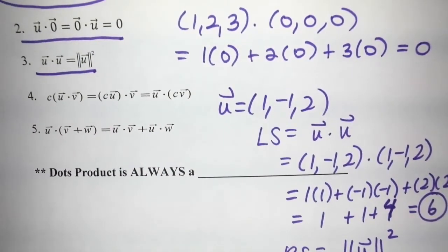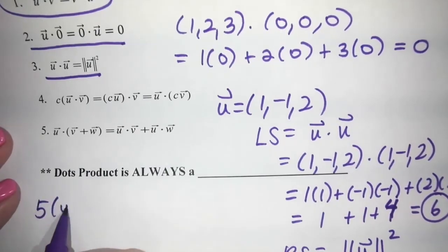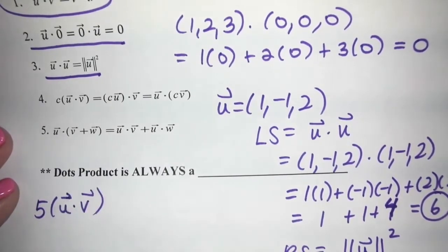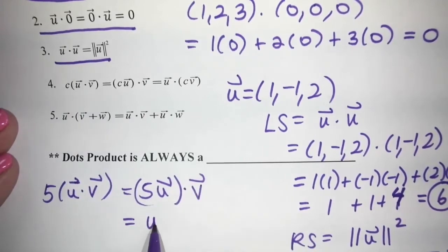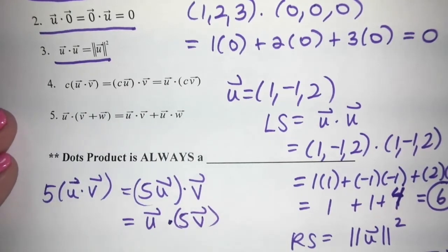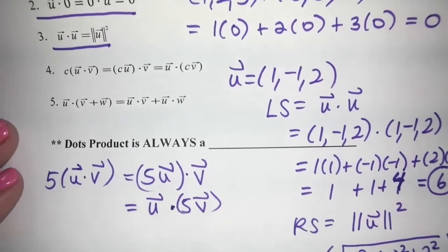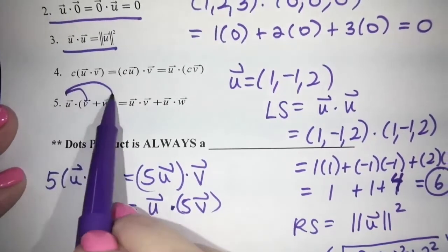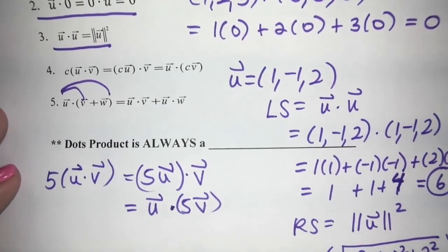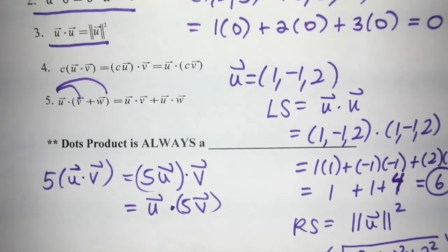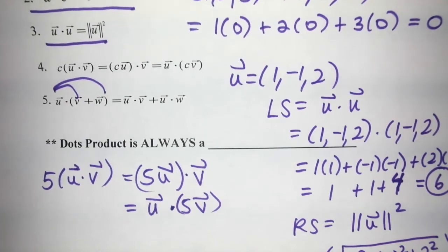Property 4: if you have something like 5u dot v, you can put the 5 with the u — giving 5u dot v — or with the v — giving u dot 5v. You cannot put it in both, so 5u dot 5v would be wrong; that's a common mistake. Property 5 is just distributing: u dot (v + w) equals u dot v plus u dot w. We'll do exam questions on which properties are true or false during prep.